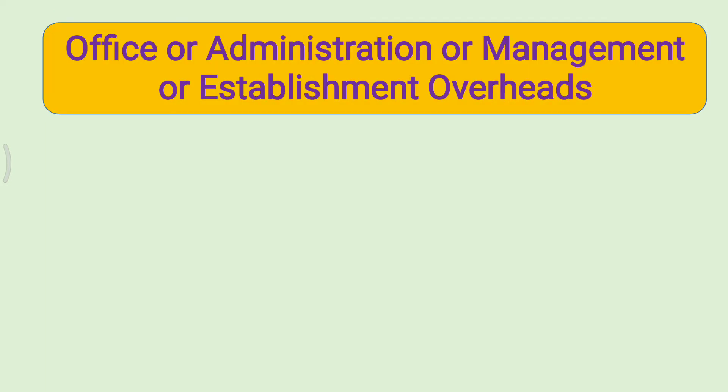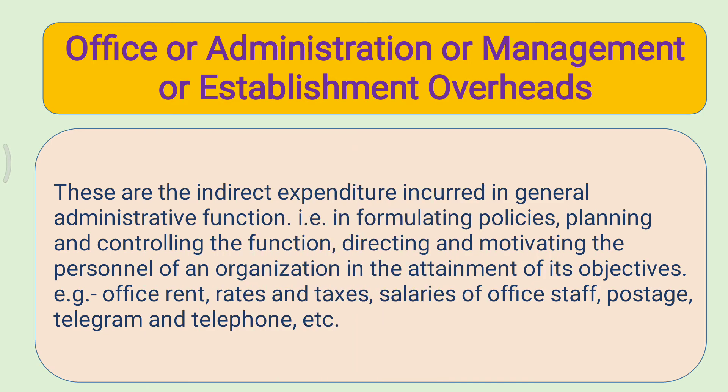The second type is office, administration, management, or establishment overheads. These are the indirect expenditures incurred in the general administrative function — that is, in formulating policies, planning and controlling the function, directing and motivating the personnel of an organization in the attainment of its objectives. For example: office rent, rates and taxes, salaries of office staff, postage, telegram and telephone expenses, etc.